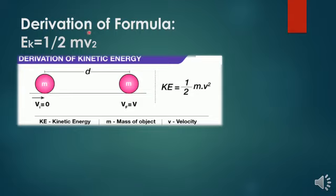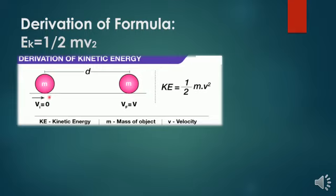Now let's derive the formula for kinetic energy and show how KE = ½mv². We assume an object of mass m. Before the body sets into motion, its initial velocity vi is zero meters per second.